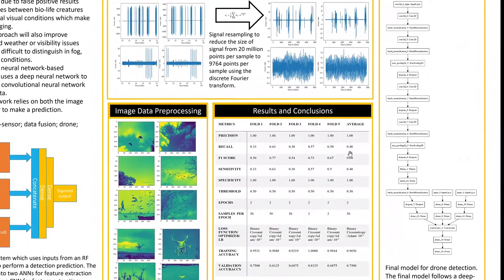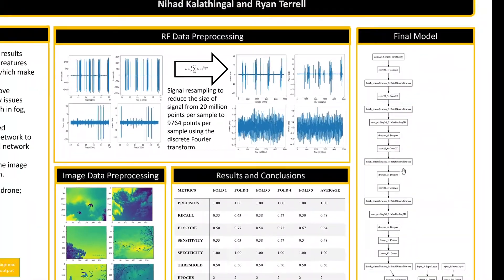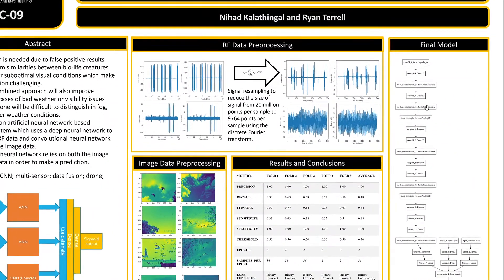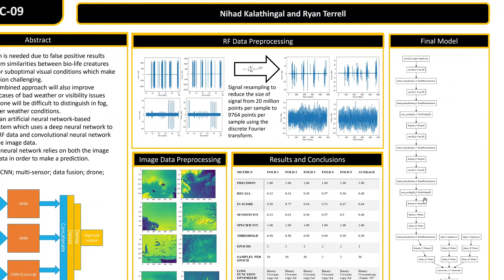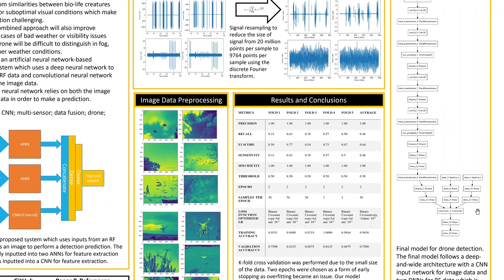Our final model consists of a convolutional neural network which processes the image data, and then two deep neural networks which handle the higher and lower bands of the 2.4 gigahertz frequency RF data.